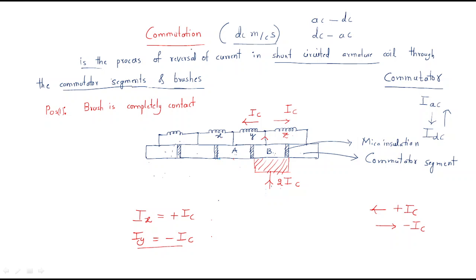Hello everyone. In the last session we discussed about commutation. Commutation is the process used to convert AC to DC or DC to AC, otherwise we can name it as current reversal taking place — short circuit coil current reversal. In this session we will continue the same commutation topic.